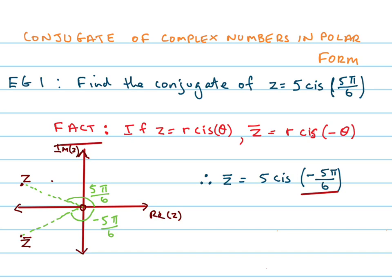The diagram is often helpful to get your bearings. So z is 5 cis 5 pi on 6, so there's z right there. And remember, it's just really a reflection in the real axis.